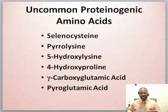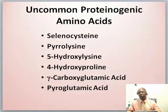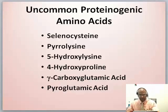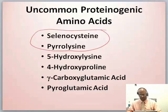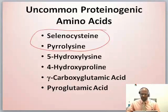There are also some uncommon proteinogenic amino acids — amino acids that can be found in proteins but are very uncommon. These include selenocysteine, pyrrolysine, 5-hydroxylysine, 4-hydroxyproline, gamma-carboxyglutamic acid, and pyroglutamic acid. We're not going to learn the structures of these; just be aware of them.